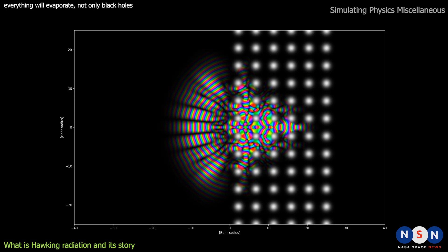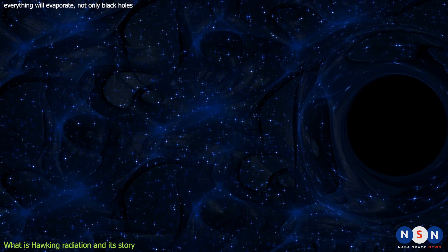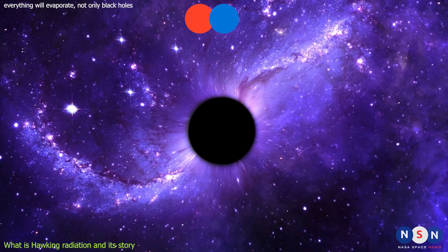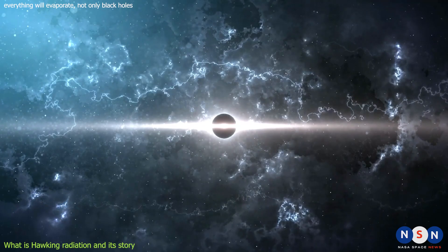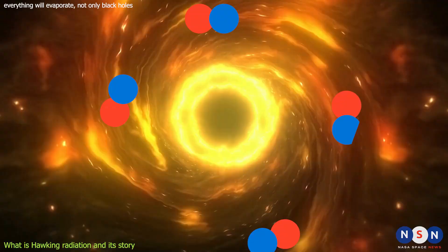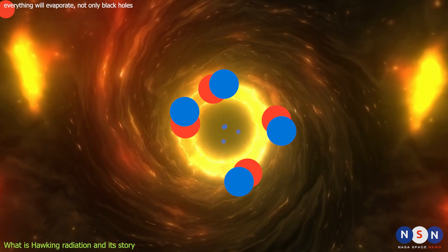It is filled with fluctuations of quantum fields that create pairs of particles and antiparticles out of nothing. These pairs usually annihilate each other quickly and return to the vacuum. But near the event horizon, something different can happen. One member of the pair can fall into the black hole while the other can escape to infinity. This means that black holes can emit radiation and have a temperature. This radiation is called Hawking radiation.